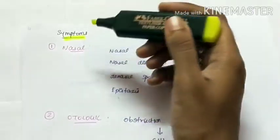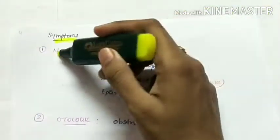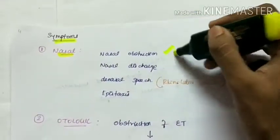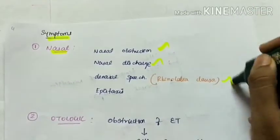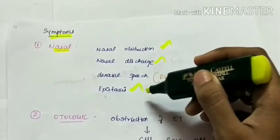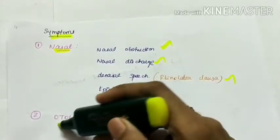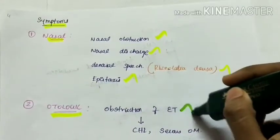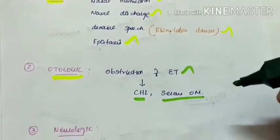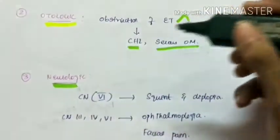Symptoms of nasopharyngeal carcinoma include nasal symptoms like nasal obstruction, nasal discharge, and denasal speech called rhinolalia clausa, and epistaxis (nose bleeding). Otologic symptoms occur because of obstruction of the eustachian tube, leading to conductive hearing loss and serous otitis media. Next, neurological symptoms.